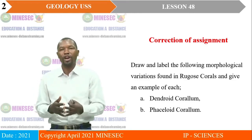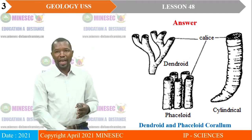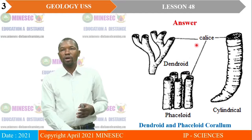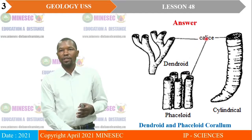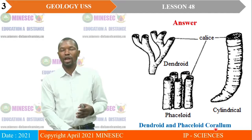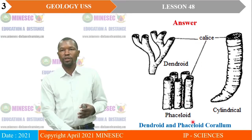And the different modes of life. So, in our diagram, there is one particular part — that is the chalice — that is common for Dendroid, Phasanoid, and Cylindrica. Remember that you are required to draw Dendroid and Phasanoid Coralum. So, the morphological part that is diagnostic is the chalice.